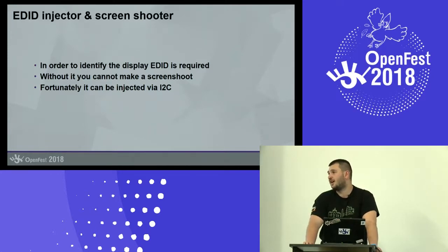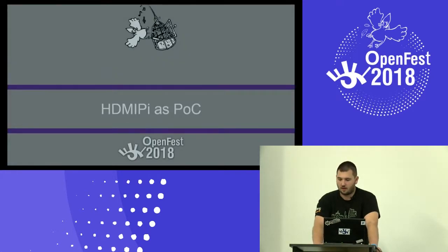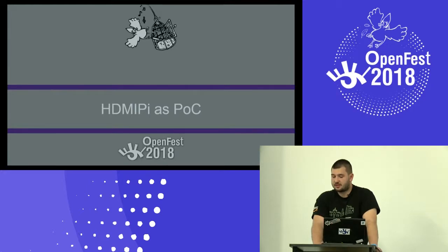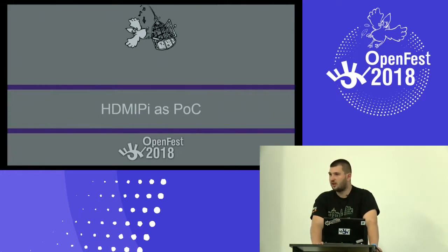One important feature is the EDID injector. Some boards are not happy to boot without a display connected, so we inject EDID information over the HDMI port. This is essentially I2C communication from the NanoPy Neo to the device under test, making the board think it has a monitor connected so it starts providing video output — even though there's no one on the other side listening to the signal. Thanks to this, you can take screenshots. But if you want to do real testing of applications that use hardware overlay to play video, you need some way to capture the actual HDMI output, not just a screenshot.